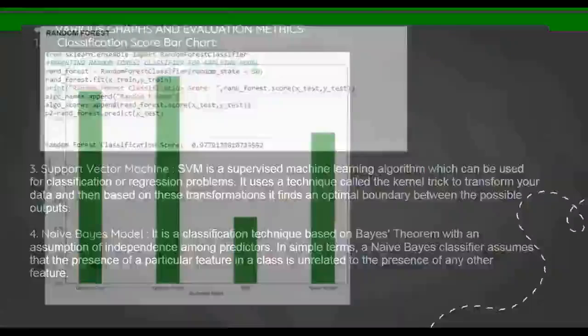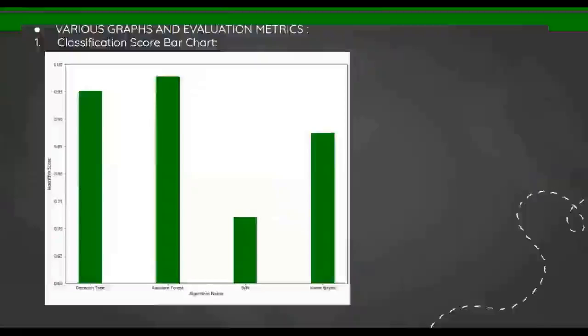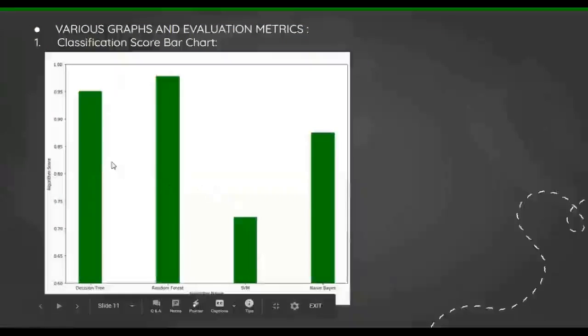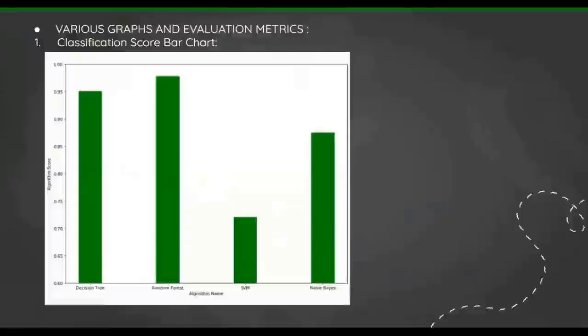Now showing the various graphs and evaluation metrics. The first one is classification score bar chart. I have compared the algorithm scores of different models. I've taken the name of the algorithms on the X-axis and algorithm score on the Y-axis. You can see the random forest has the highest classification score, approximately 98 percent.